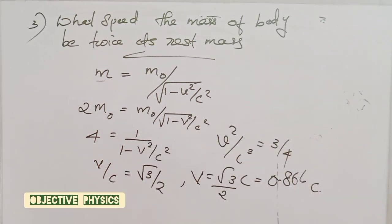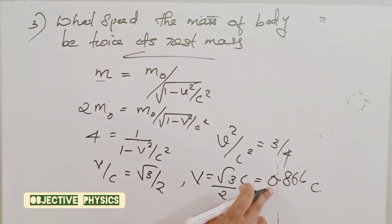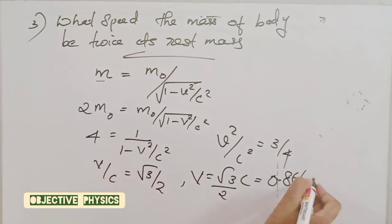At what speed will the mass of a body be twice its rest mass? The answer is 0.866c.